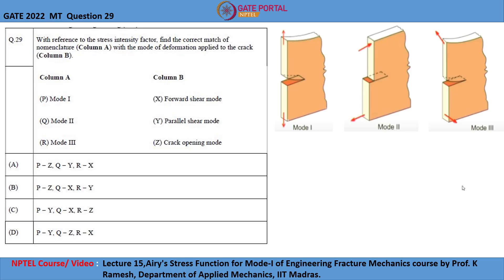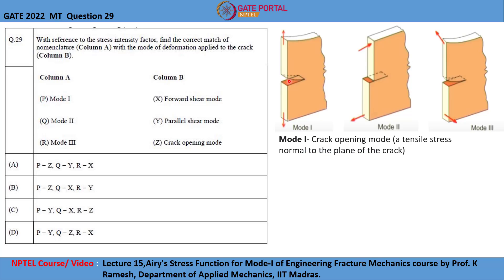This schematic shows the mode of deformation applied to the crack as per nomenclature. Let us look at each mode. Mode 1 is called the crack opening mode, where tensile stress is applied normal to the plane of the crack. As we see here, this is the plane of the crack, and the tensile stress is applied normal to this plane. So Mode 1 is the crack opening mode.